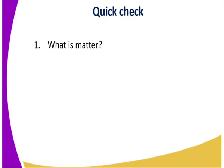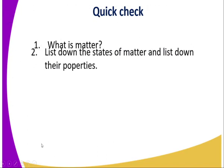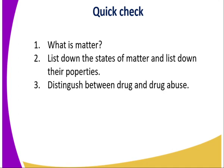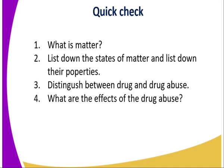Did we understand some of the concepts that we learned in primary school? We can test this by answering the following questions. Question one: What is matter? Question two: List down the states of matter and their properties. We can also distinguish between drug and drug abuse, and highlight some of the effects of drug abuse. Don't forget that these effects may depend on the type of drug that is abused, and the effects are not the same.